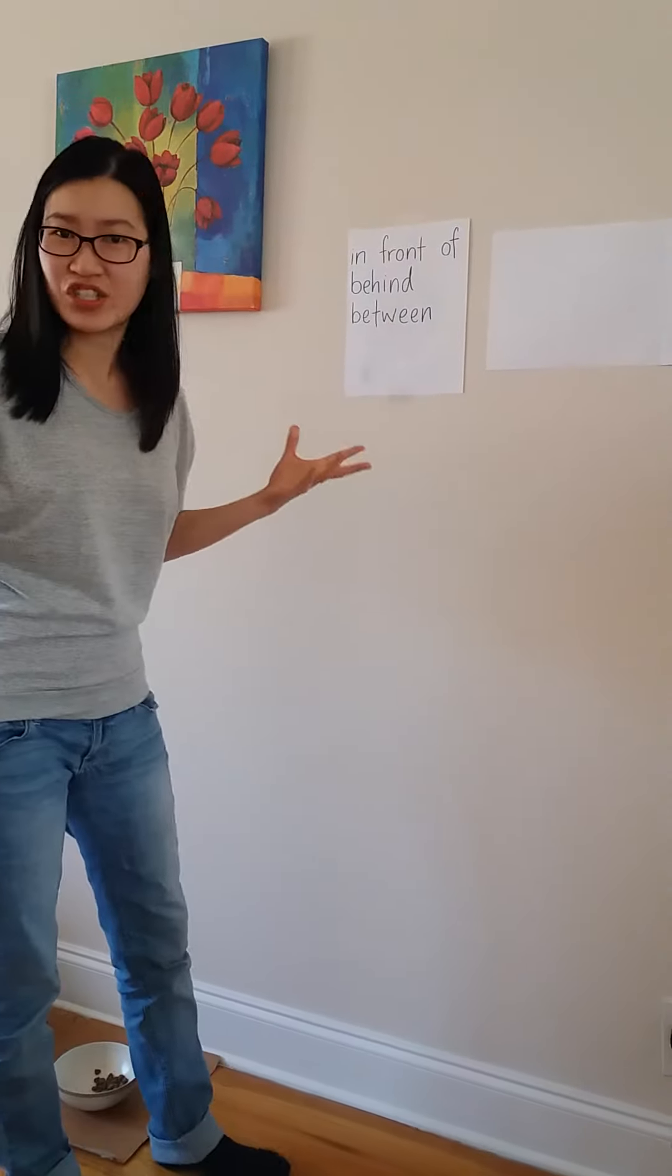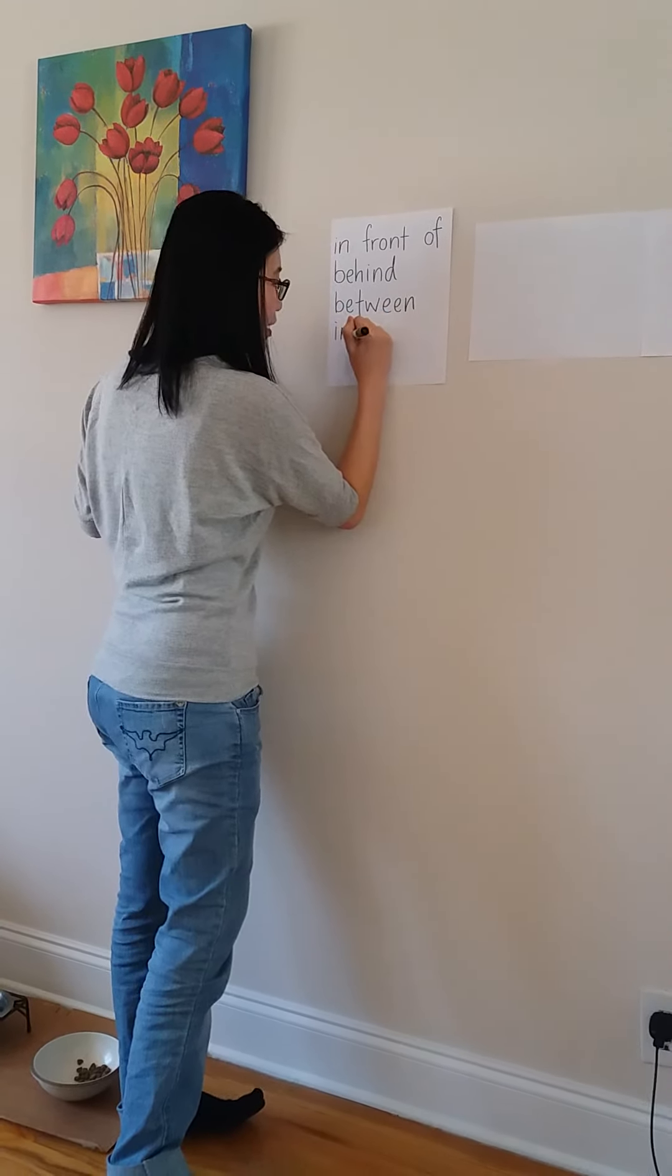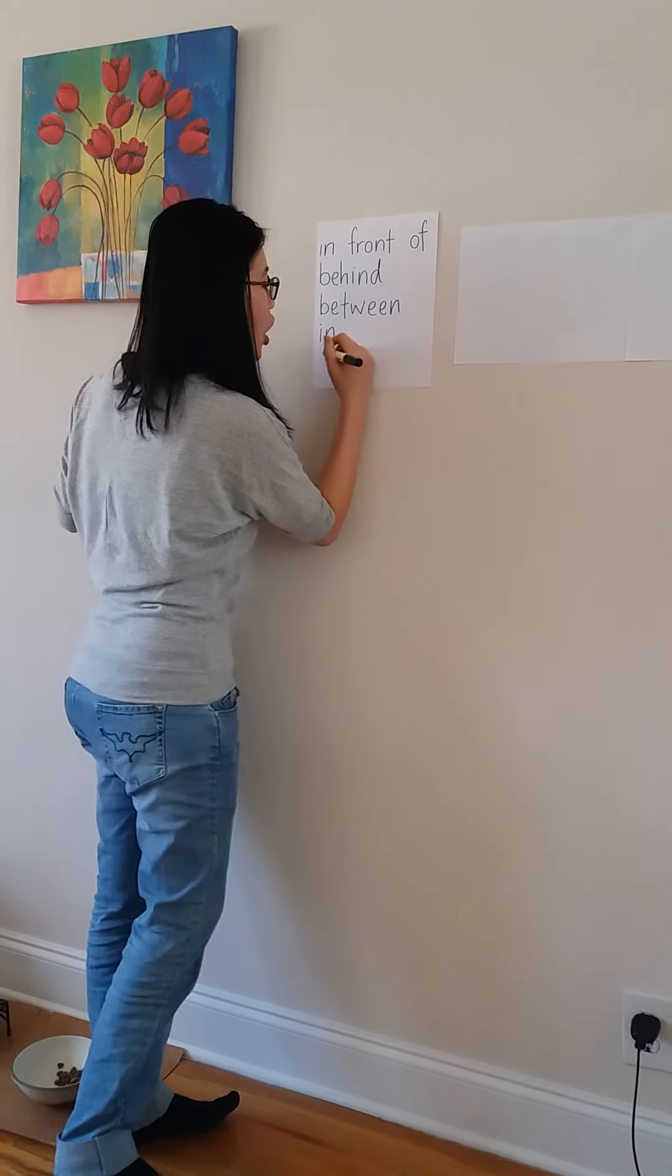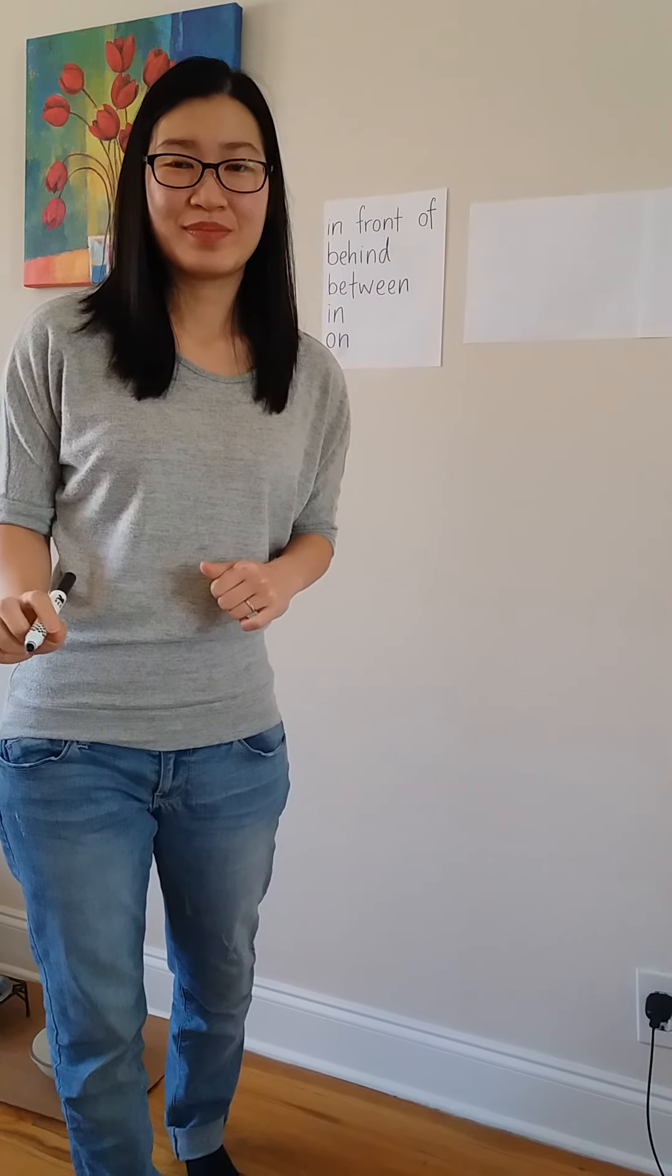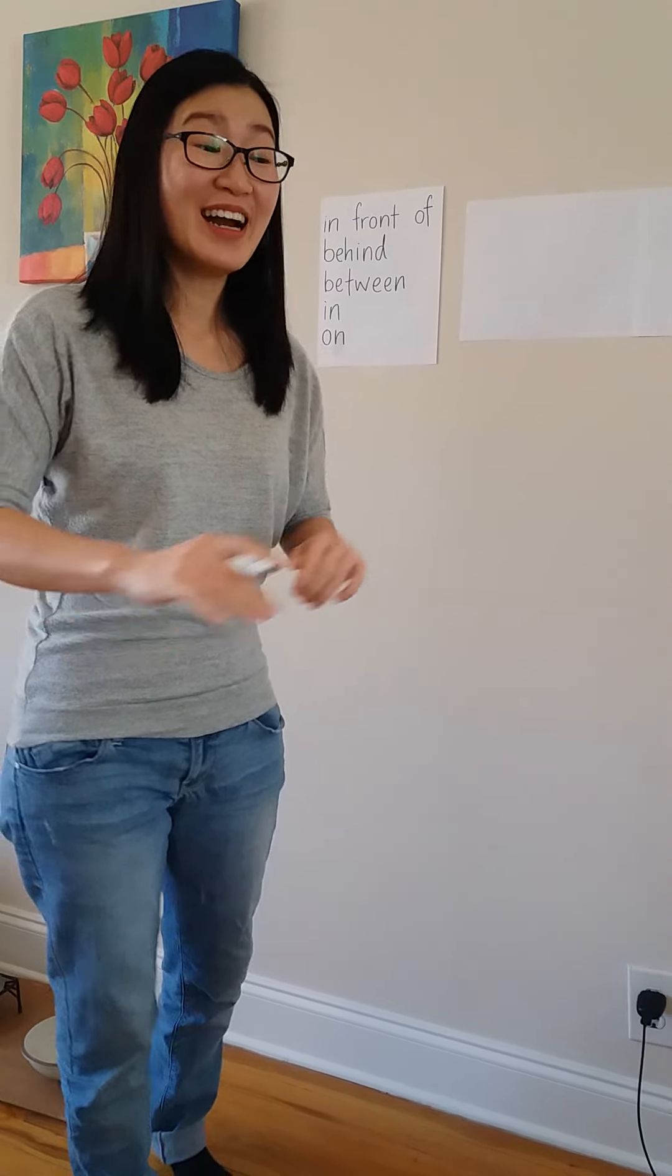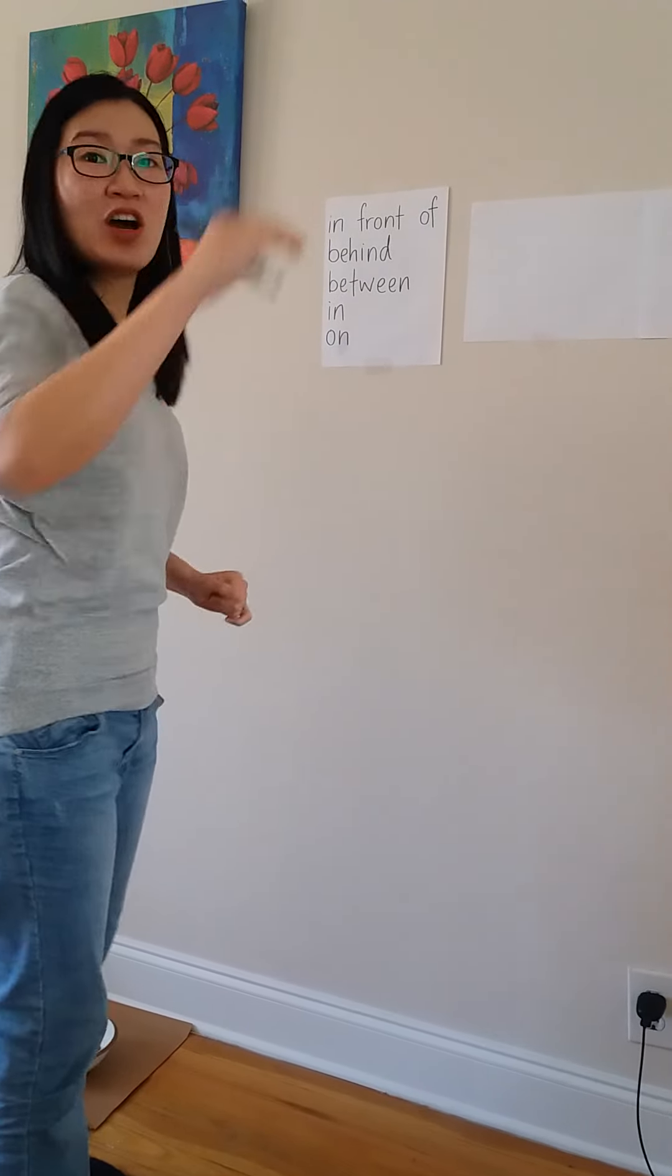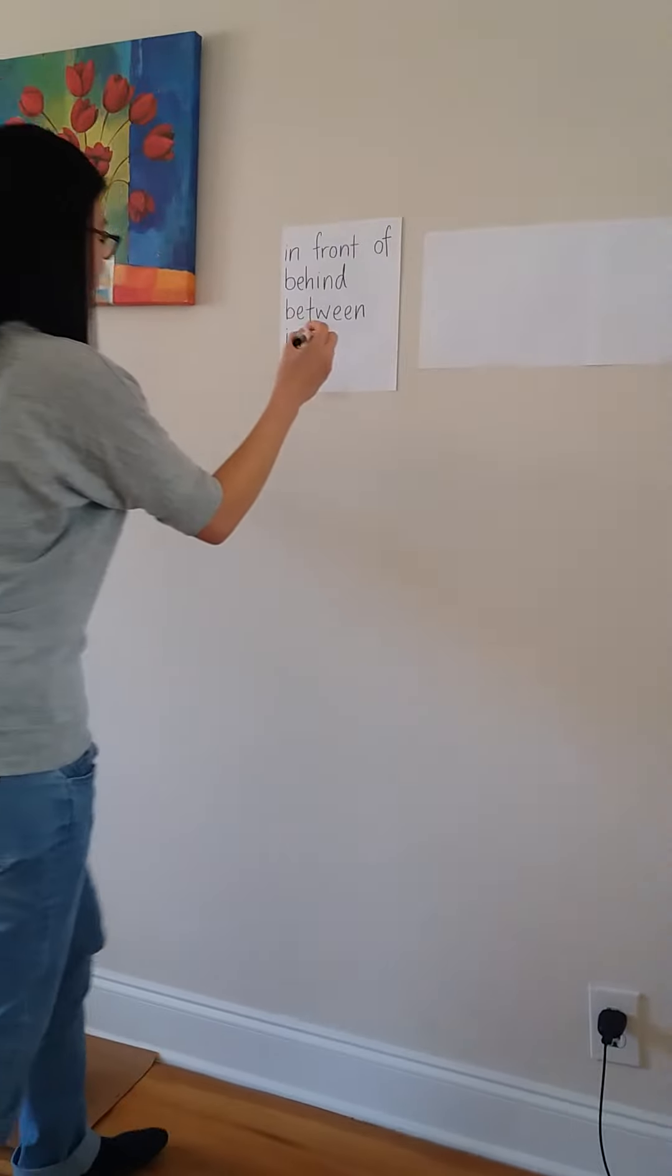We are going to learn more prepositions. You already know this one: 'in.' It means inside. And here's another one: 'on.' Your books are on the table—that means they are on top of the table. That's right. So, if I stand on this chair, then I am on the chair. Let me draw a little stick figure here.